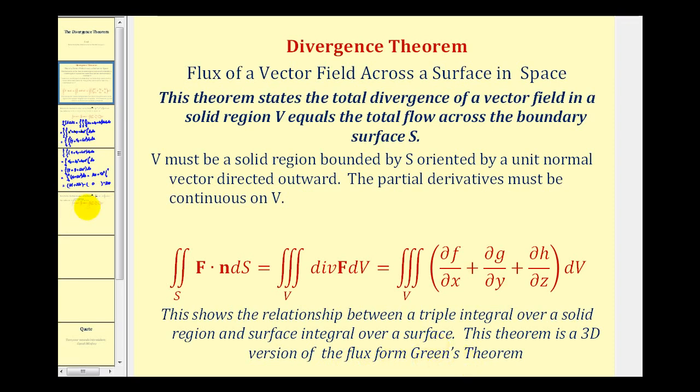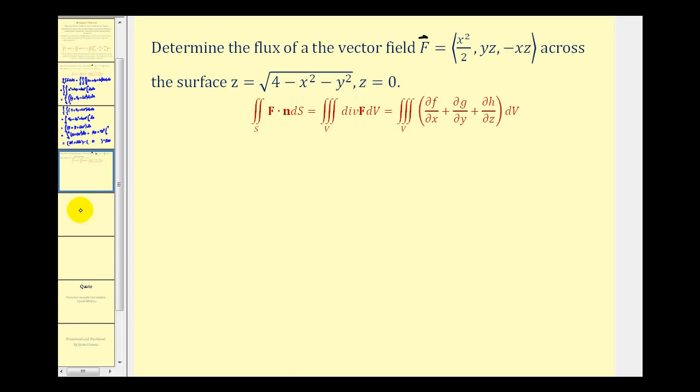Let's take a look at our second example. We want to determine the flux of the given vector field across the surface Z equals the square root of four minus X squared minus Y squared and Z equals zero. Before we do this, let's take a look at it graphically.